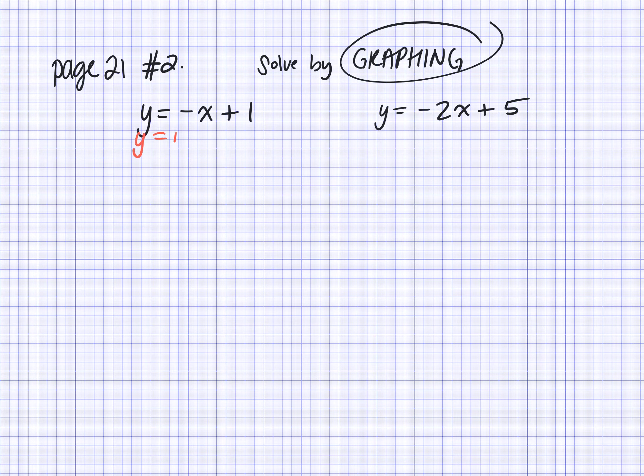If it's already in slope-intercept form, which is y equals mx plus b, then you can easily figure out m and b. So for the first one, what number is in front of x? What's the coefficient of x? Negative 1, right? The rise would be negative 1, and what would be the run? What can I divide any whole number by that doesn't change it? What's the y-intercept? Positive 1.